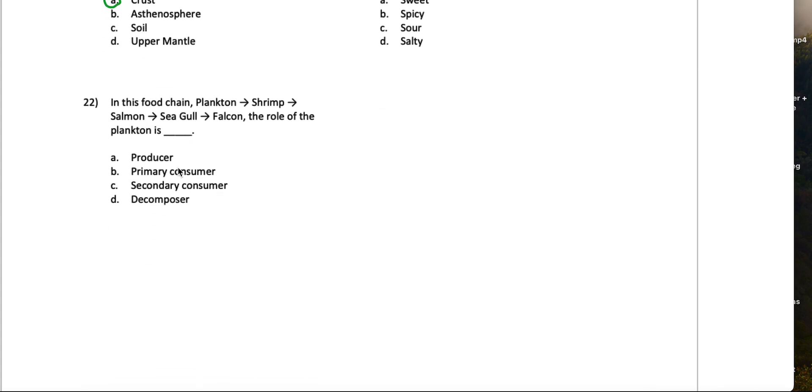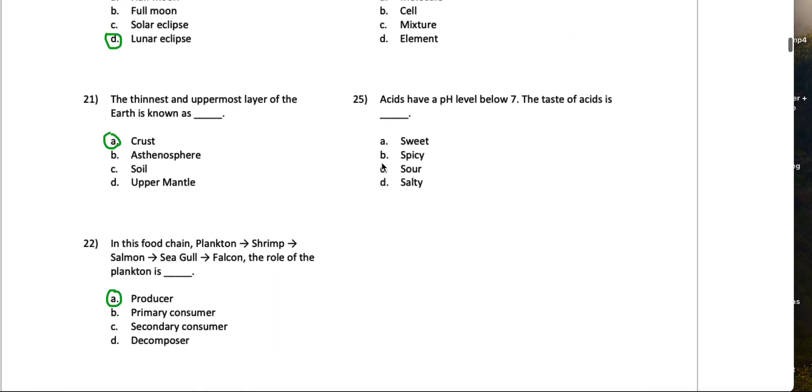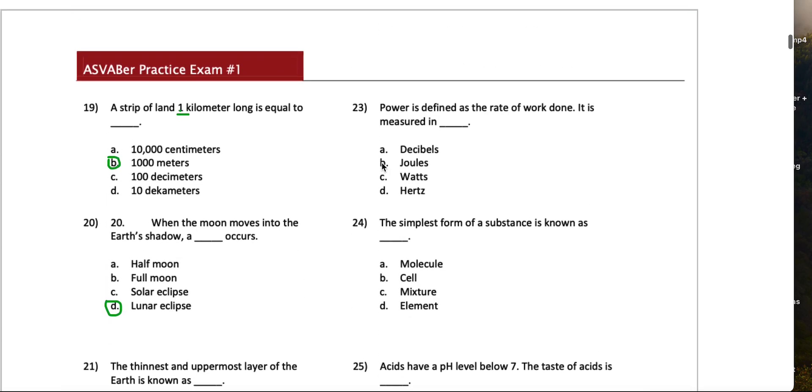In this food chain, plankton, shrimp, salmon, seagull, falcon, the role of the plankton is blank: producer, primary consumer, secondary consumer, decomposer. I'd say producer. Again, this goes way back to biology class.